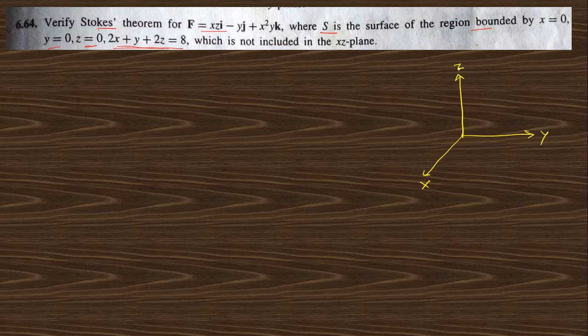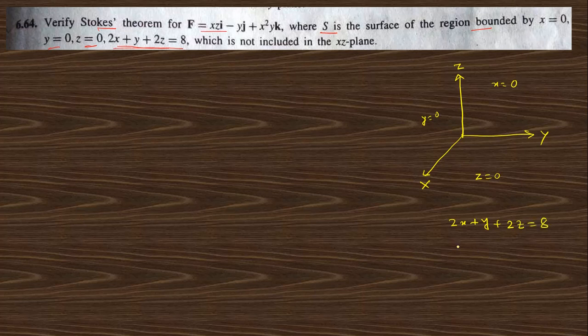Let me draw the curve. This is the x-axis, this is the y-axis, and this is the z-axis. In the x=0 plane we have this plane, y=0 means this plane, and z=0 is this plane. The plane equation is 2x + y + 2z = 8. Writing it in intercept form: x/4 + y/8 + z/4 = 1.